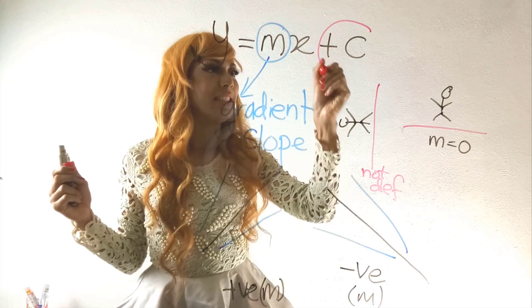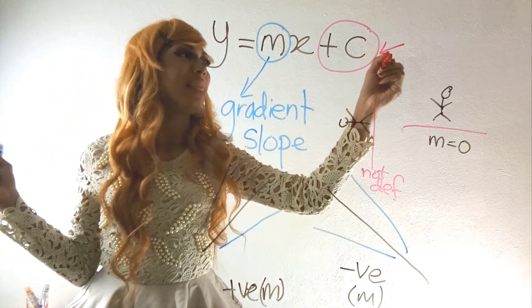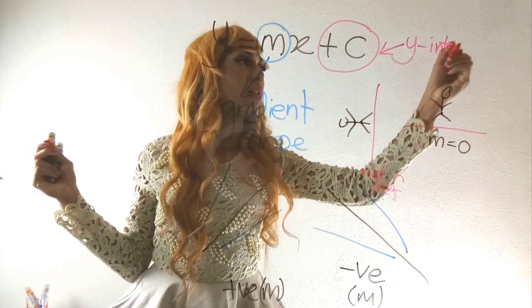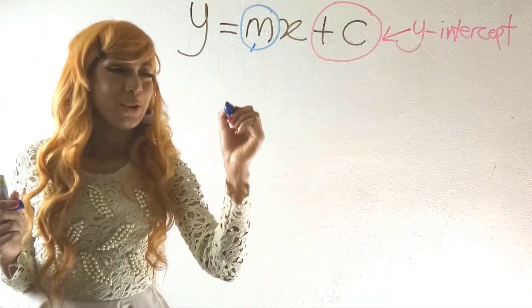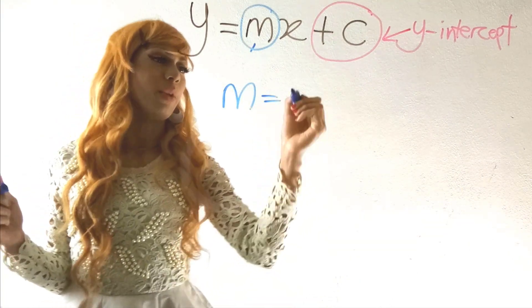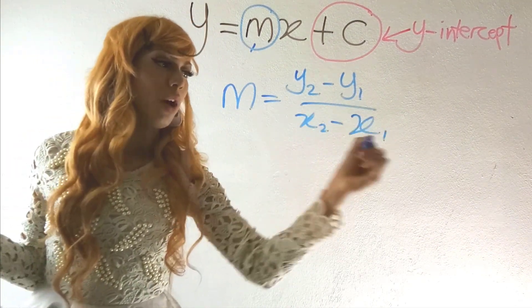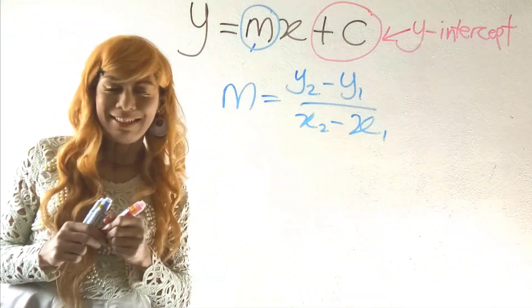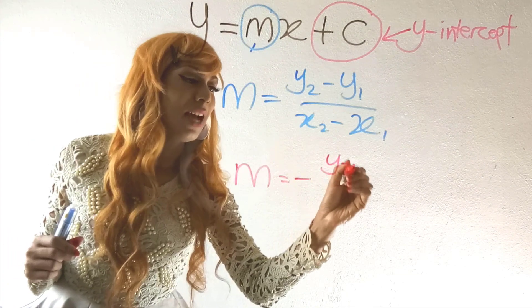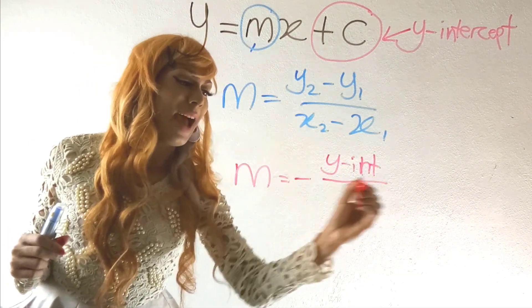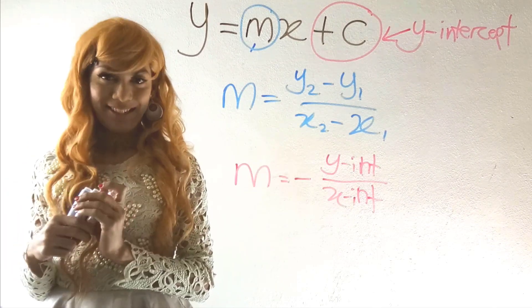The c in y = mx + c represents the y-intercept. There are also two formulas to find gradient: m = (y₂ − y₁) / (x₂ − x₁), or when you have the y-intercept and x-intercept values, m = −(y-intercept) / (x-intercept).